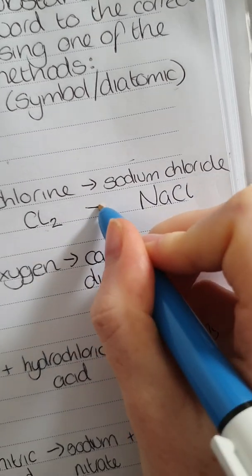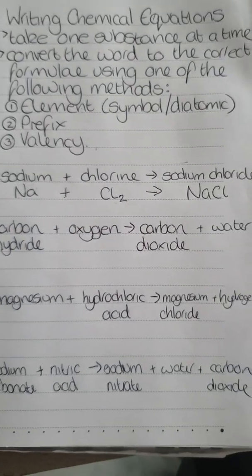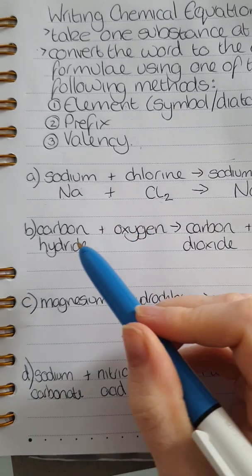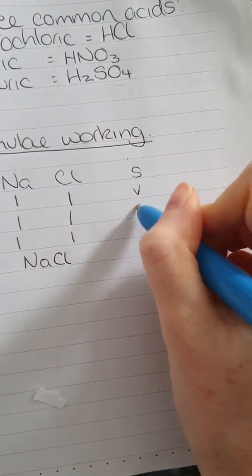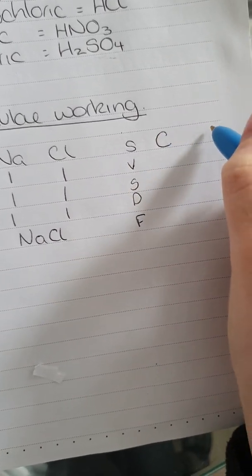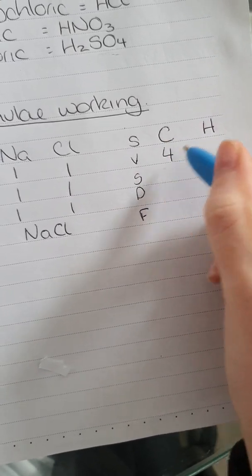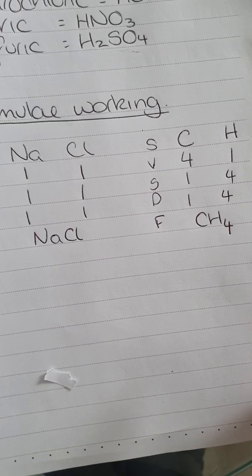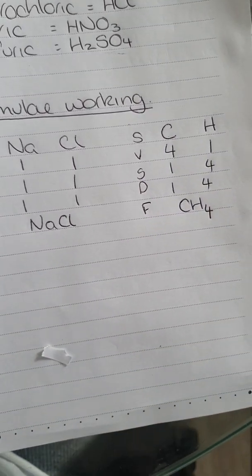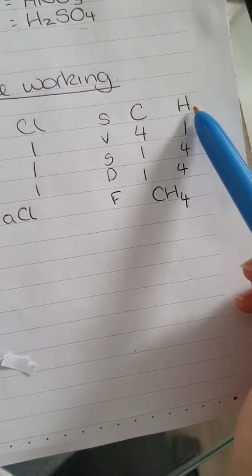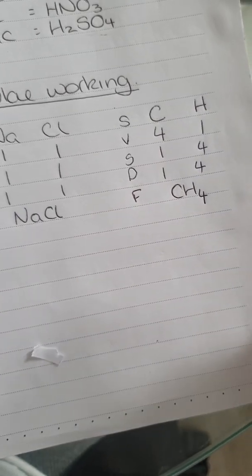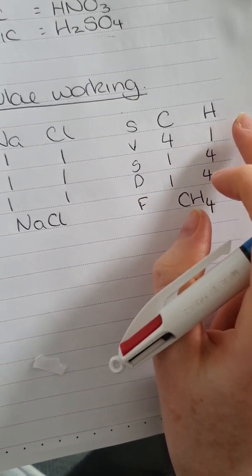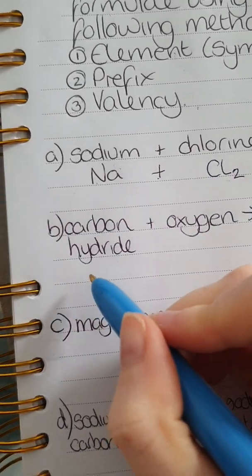Transfer that into the equation, making sure you keep your pluses and arrows. Next: carbon hydride. No prefixes, so it's the valency method. Carbon C has valency 4, hydrogen H has valency 1 — swap them to get CH4. A common mistake here is adding a 2 because hydrogen is diatomic. That rule does not apply when using the valency method — you ignore the diatomic rule and use the valency value from the data book.